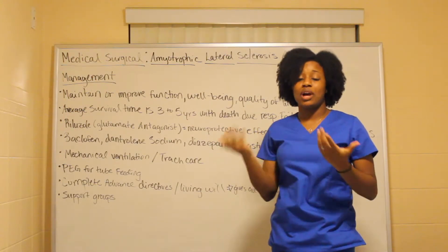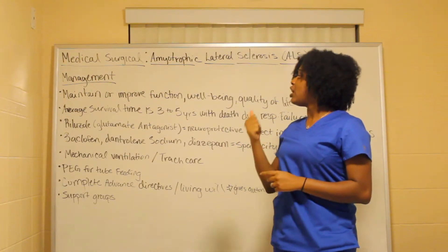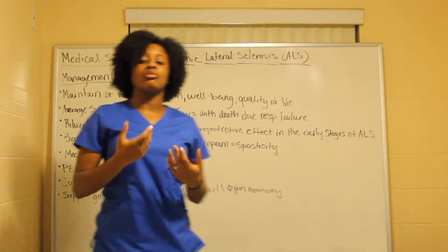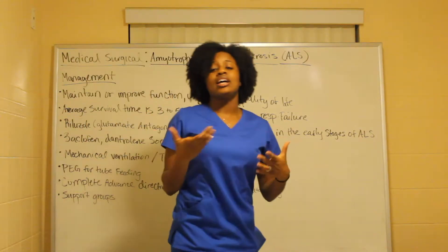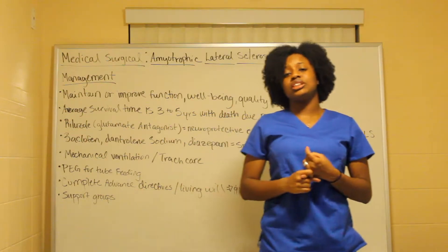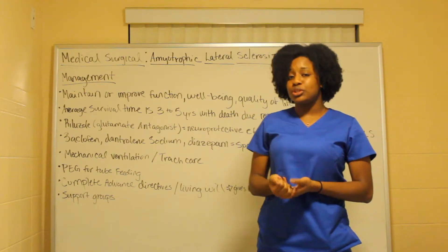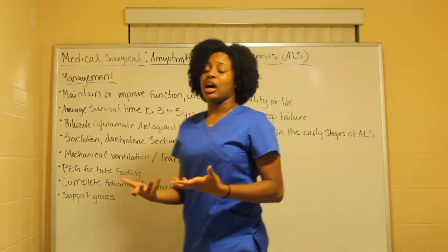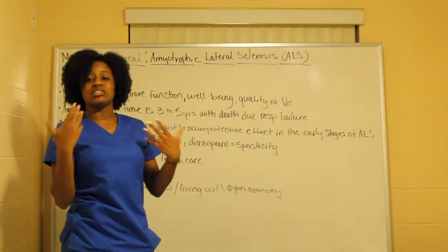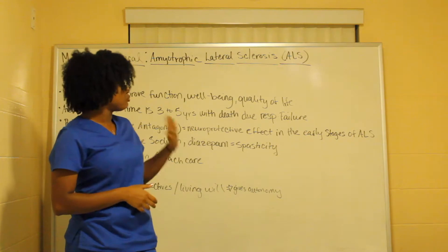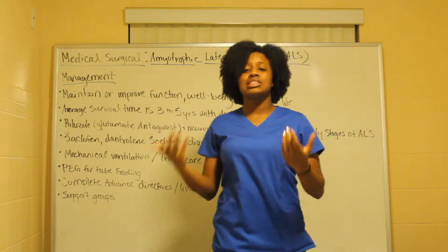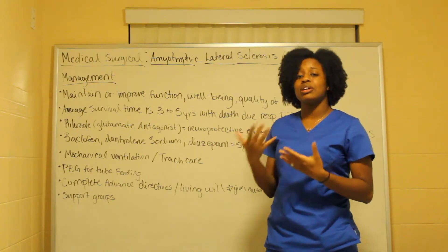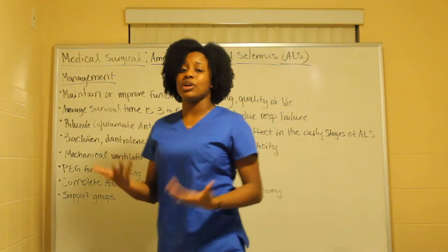For management, the goal is to maintain and improve function, wellbeing, and quality of life. Like GBS and multiple sclerosis, there is no cure — you can only try to prolong function as long as possible. The prognosis is poor: the average person lives between three to five years, and the main cause of death is respiratory failure.